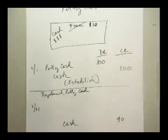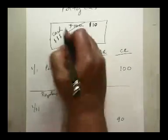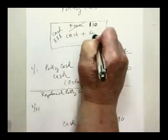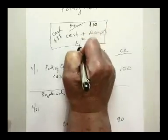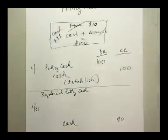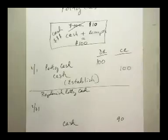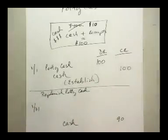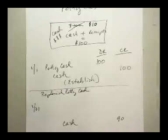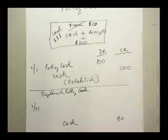Every time they come back with change and a receipt, I put that back in the drawer. So the theory is that at all times my cash plus receipts equals $100. If you're doing it correctly, you should always have some amount of cash and a stack of receipts that total the original amount established — $100 in this case. Then at the end of the month I'll take my receipts, add them up, put them in different categories: $30 for supplies, $20 for postage, $40 for fuel. I'm going to write this check for $90, record those expenses, and then put those receipts into a paid bills file.